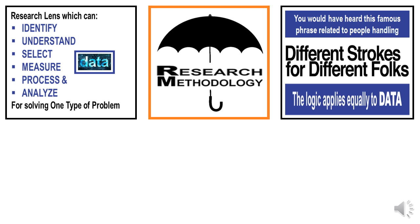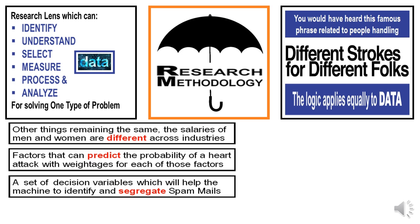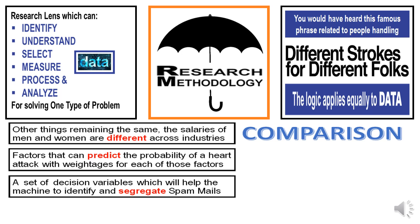So what do we mean by one type of problem? You would have heard that famous phrase: different strokes for different folks. This logic applies equally well to data. Let us look at some completely different types of problems. Problem number one: other things remaining the same, the salaries of men and women are different across multiple industries. The key word here is 'different,' and hence the problem is a comparison problem. You have a set of data with a particular mean and a particular variance around that mean, another set of data with a very different mean — two normal distributions, if you may — and how do you compare between these two distributions is one type of problem.